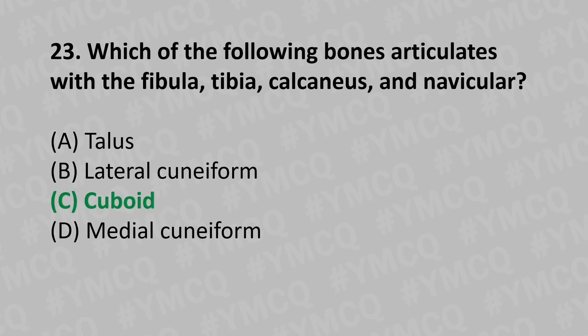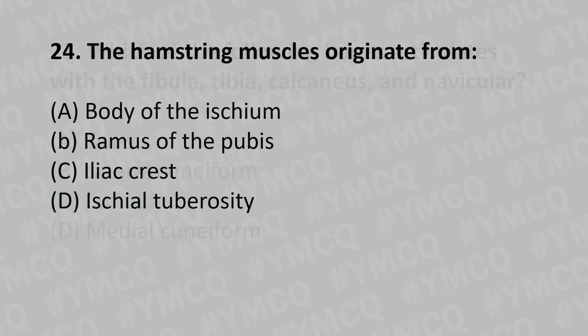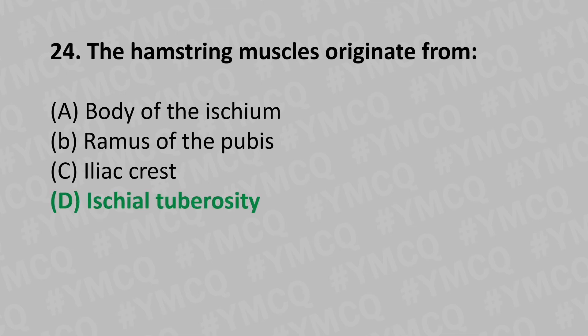Moving to our 24th question: the hamstring muscles originate from — Option A: body of the ischium, Option B: ramus of the pubis, Option C: iliac crest, Option D: ischial tuberosity. And the answer is Option D: ischial tuberosity.